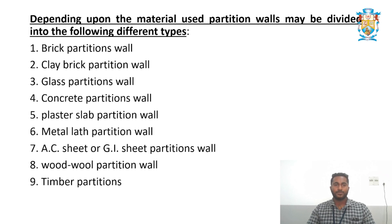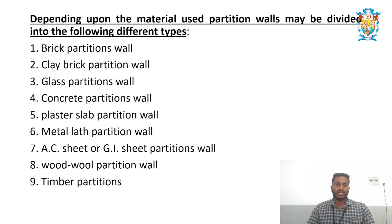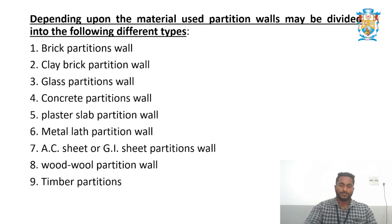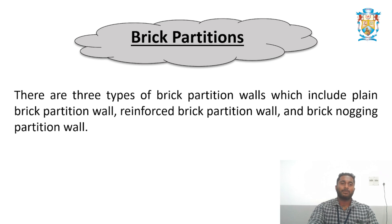The types of partition walls include: brick partition wall, clay brick partition wall, glass partition wall, concrete partition wall, plaster slab partition wall, metal lathe partition wall, AC sheet or GI sheet partition wall, wood partition wall, and timber partition wall. They are categorized according to the material used.